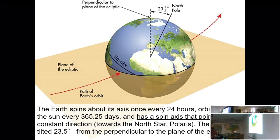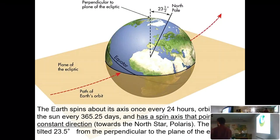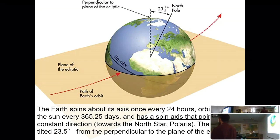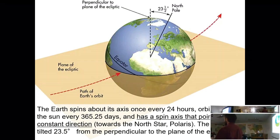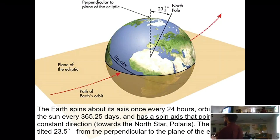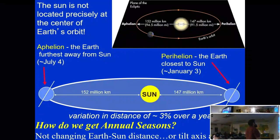As we orbit the sun, we receive differing levels of direct sunlight throughout the year. We're currently heading toward the winter solstice, around December 22nd–23rd — that's the darkest day of the year, when the Northern Hemisphere receives the least solar radiation. It's not necessarily the coldest day, due to residual heat, but it's the point of minimum solar input.